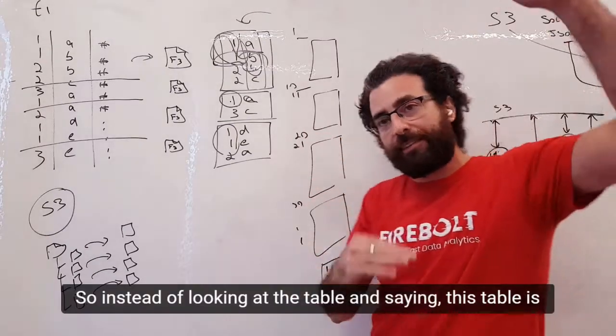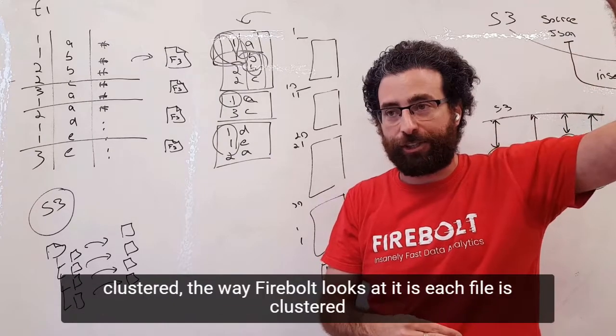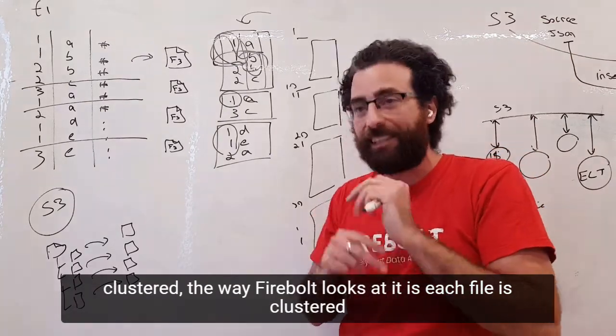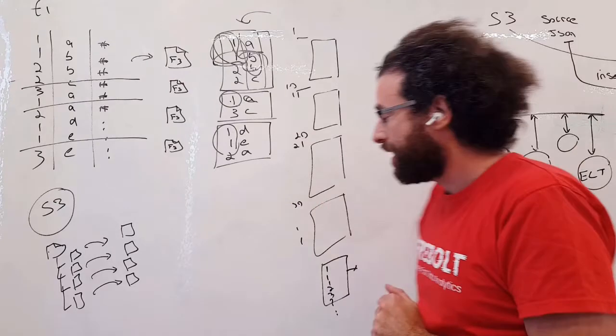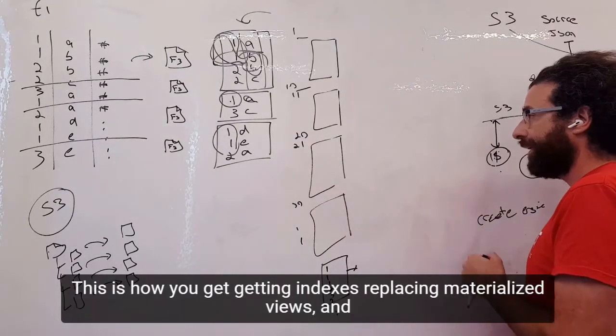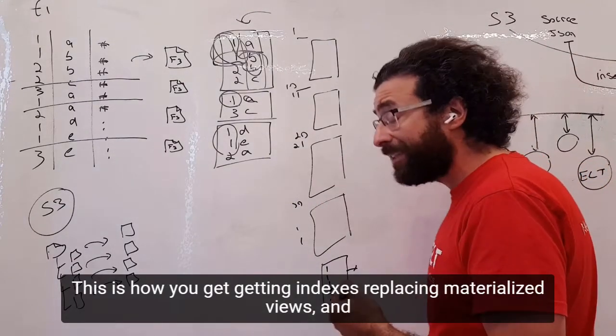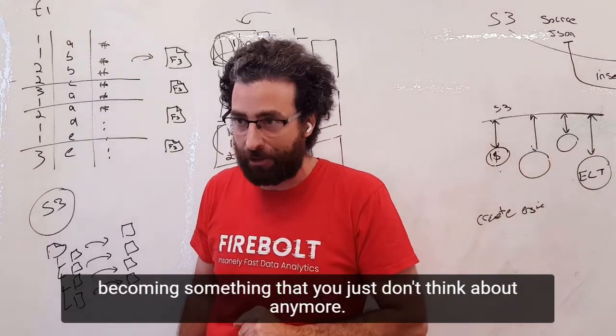So instead of looking at the table and saying this table is clustered, the way Firebolt looks at it is saying each file is clustered or ordered. This is how you get aggregating indexes replacing materialized views and becoming something that you just don't think about anymore.